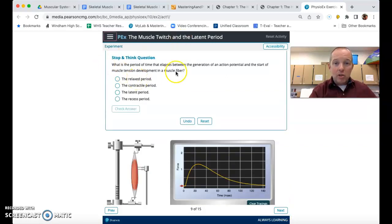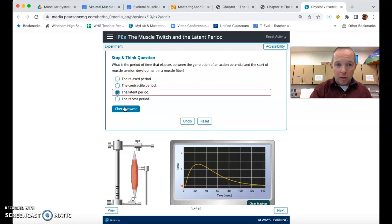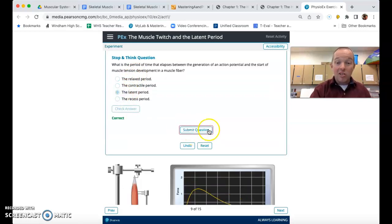And the period of time that elapses between the generation of an action potential and the start of muscle tension development in a muscle fiber is that latent period that we're talking about. So I'm going to go ahead and check this answer. It is in fact correct.